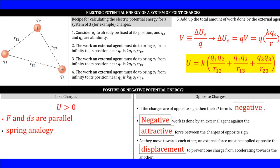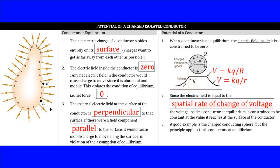Next section: positive or negative potential energy. This gives us a convention to keep track of positive versus negative electrostatic potential energy, and provides some deeper insights about how to think of the positive or negative nature of electrostatic potential energy.